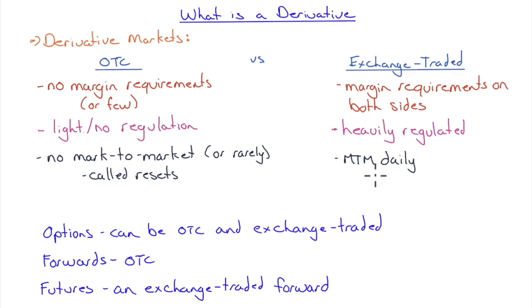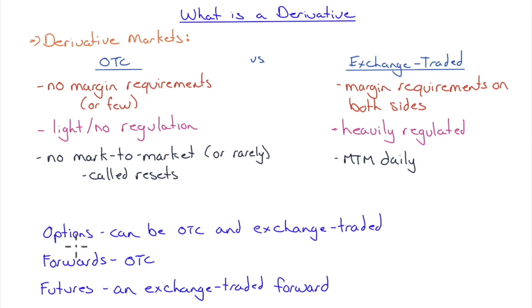In OTC there is no daily mark-to-market, meaning gains and losses can accrue until expiration — which is why counterparty risk is so much larger. Options can be both OTC and exchange traded. Forwards and futures are essentially the same thing: a futures contract is simply a forward contract that is exchange traded. If it's not exchange traded, it's called a forward agreement. That's the only difference.